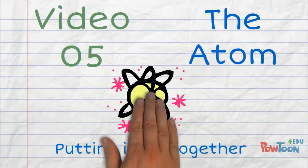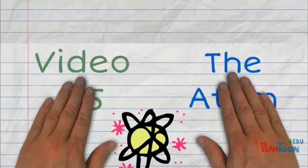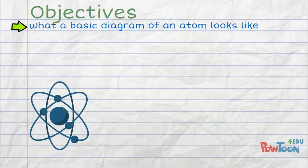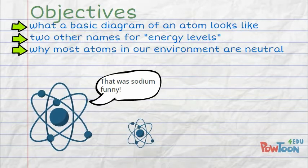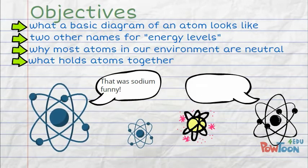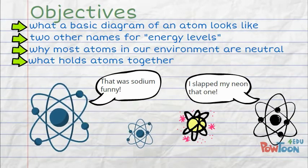Video 5, The Atom, Putting It All Together. Here are the objectives for your notes. What a basic diagram of an atom looks like. Two other names for energy levels. Why most atoms in our environment are neutral. And what holds atoms together.